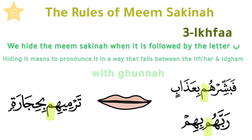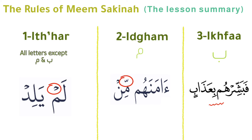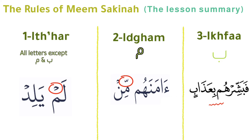Lesson summary: The Meem Sakinah has three rules. First, Iẓhar — we pronounce the Meem clearly when it's followed by any letter other than Ba or Meem; the sign in the Mushaf is a Sukun on the Meem. Second, Idgham — the Meem Sakinah is combined with the following Meem; the sign is a Shadda on the second Meem. Third, Ikhfa — the Meem is hidden when followed by Ba; the sign is the absence of any haraka on the Meem.